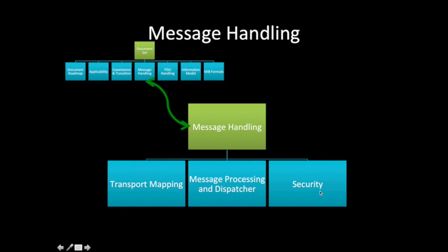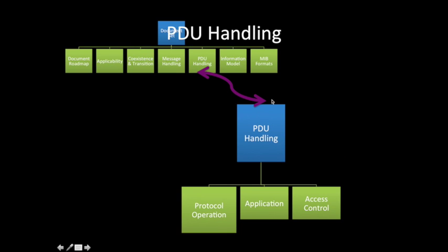Transport mapping defines how the mapping between SNMP and the transport layer is done. Message processing defines the message format, and the security covers authentication and encryption. This is the message-level security. The next pillar is PDU handling in detail. PDU handling covers protocol operations, application, and access control. Protocol operations are classified into seven classes: read class, write class, response class, notification class, internal class, confirmed and unconfirmed class. The application uses the services of an SNMP engine to accomplish certain tasks. Third is access control, which defines the mechanism for whether access to managed objects should be allowed.